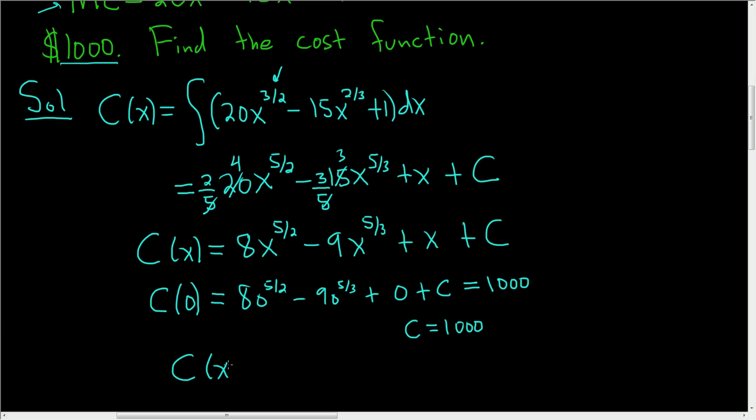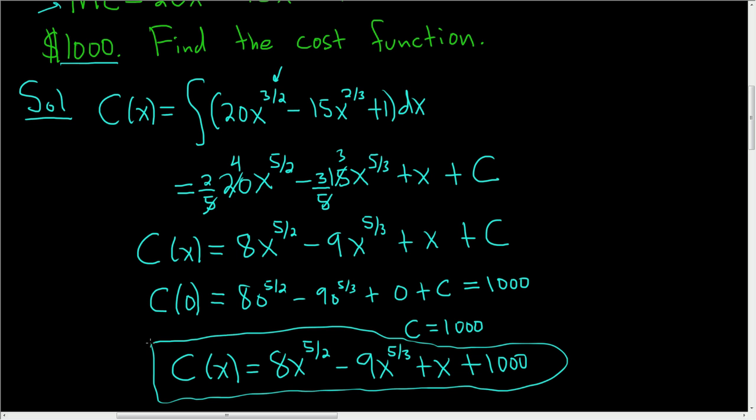So the final answer is your cost function is equal to 8x to the 5 halves minus 9x to the 5 thirds plus x plus the fixed cost of $1,000. And that is the final answer. I hope this video helps.